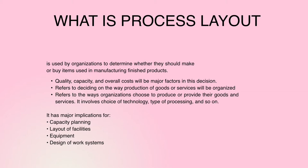Process layout is used by organizations to determine whether they should make or buy items used in manufacturing finished products. Quality, capacity, and overall cost will be major factors in this decision. Process selection refers to the ways organizations choose to produce or provide their goods and services. It involves choice of technology, types of processing, and has major implications for capacity planning, layout of facilities, equipment, and designs of work systems.